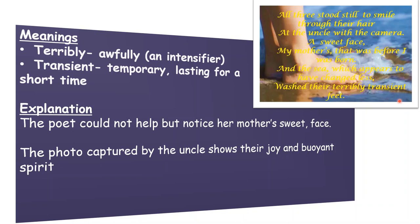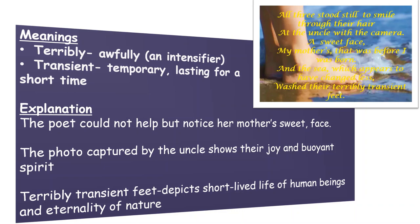The last two lines of stanza one are very important: 'The sea which appears to have changed less washed their terribly transient feet.' When the poet says 'terribly transient feet,' she refers to the ever-changing imprints of feet left on the sea. The word 'terribly' here means awfully — it is used as an intensifier to heighten the emotional effect. The word 'transient' means something very temporary, lasting a very short time. The sea has changed very little, while the poet's mother and cousins underwent changes. The poet has highlighted the short-lived life of the mother in contrast to the eternality of nature.